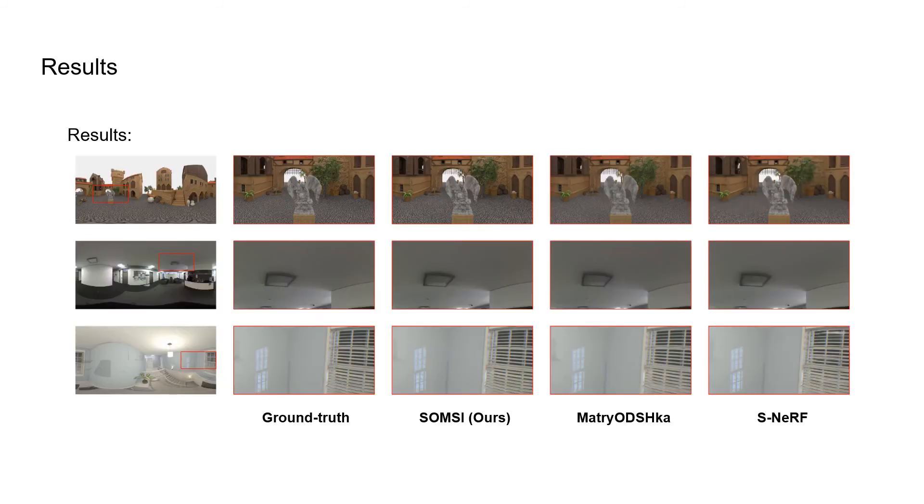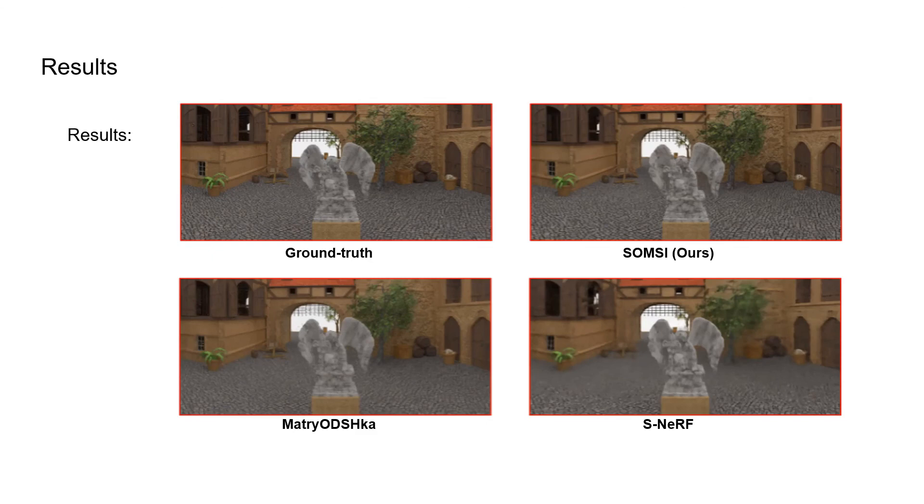Here we show sample visual comparisons between our model, Matryoshka and NERF. Note that the original NERF model is trained on perspective images. In our experiments, we use a spherical version of NERF where we replace the pinhole camera with a spherical image formation model. Zooming into the figure shows that NERF and our model can reconstruct thin structures more faithfully. Our model surpasses both baselines in capturing high frequency details.